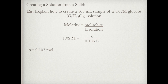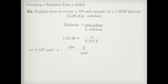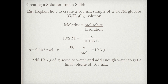When I solve for moles I get 0.107 moles. Since I can't measure moles in the lab, I need to convert this into grams. I'll put moles on the bottom and grams on top, using the molar mass of glucose on top and one mole on the bottom, which gives me 19.3 grams. So to create the solution, I'll add 19.3 grams of glucose to a container with a little bit of water to dissolve it, then add enough water to reach a final volume of 105 milliliters.